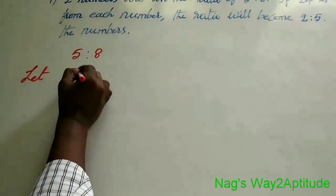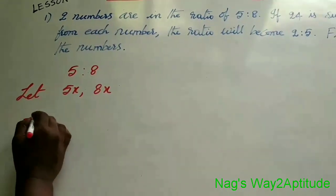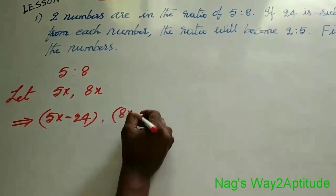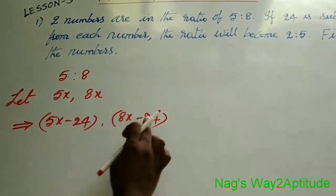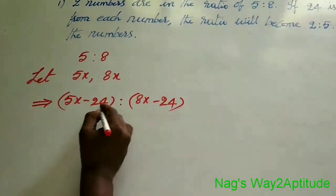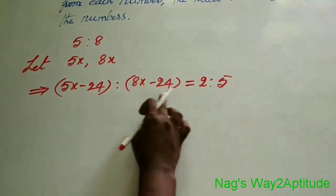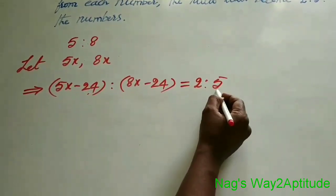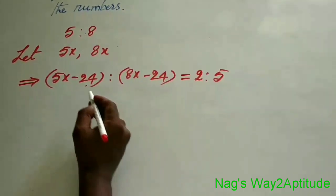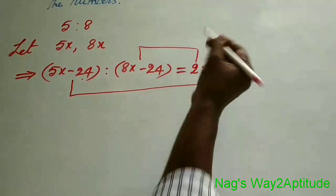Let the numbers be 5x and 8x. If you subtract 24 from these numbers, like 5x minus 24 and 8x minus 24, the ratio of these two terms, according to the question, is 2 is to 5. So, 5x minus 24 is to 8x minus 24 equals 2 is to 5. Here the extremes and means are identified, and as told in lesson 1, the product of extremes is always equal to the product of means.